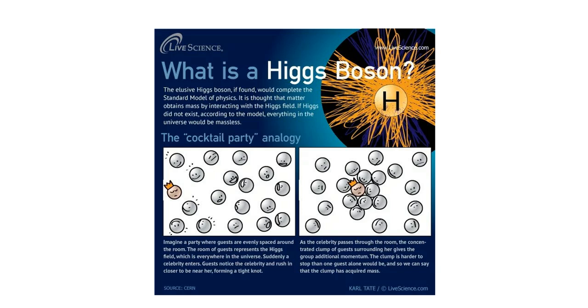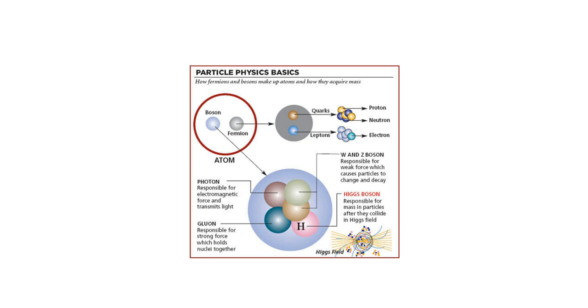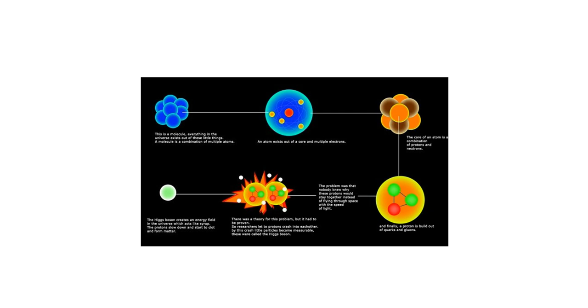This is exactly what the Higgs field is like. The Higgs field is an invisible energy field that exists all around us. Some particles, like celebrities at the party, interact a lot with the field, so they get mass and move more slowly. Other particles, like nobodies at the party, barely interact. They stay light or massless, zipping around freely.